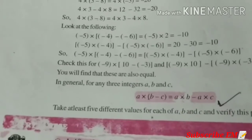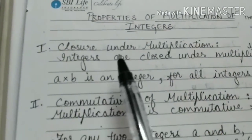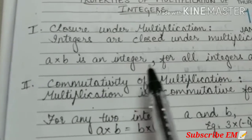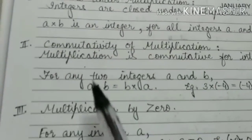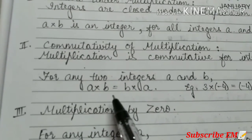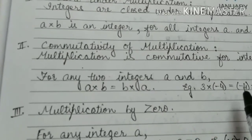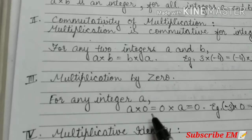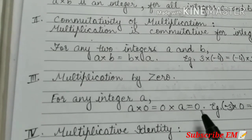So, these are the six properties. Here I have written, first closure under multiplication, A into B is an integer for all integers A and B. Then commutativity, A into B is equal to B into A. You can write one example also.